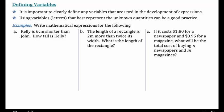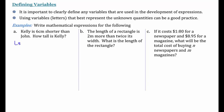So in here it says, write mathematical expressions for the following. Kelly is six centimeters shorter than John. How tall is Kelly? So here our variables are the heights of Kelly and John. So to define our variable, we could say, let height of Kelly equal K and John equal J. You could have used a little K, little J if you wanted to. If you do that, we often use cursive letters.